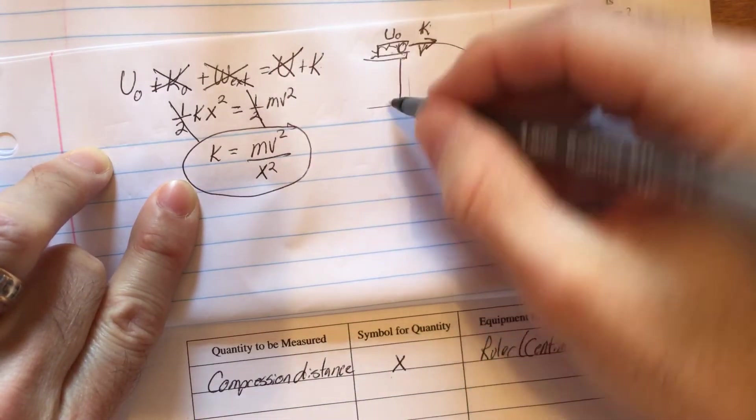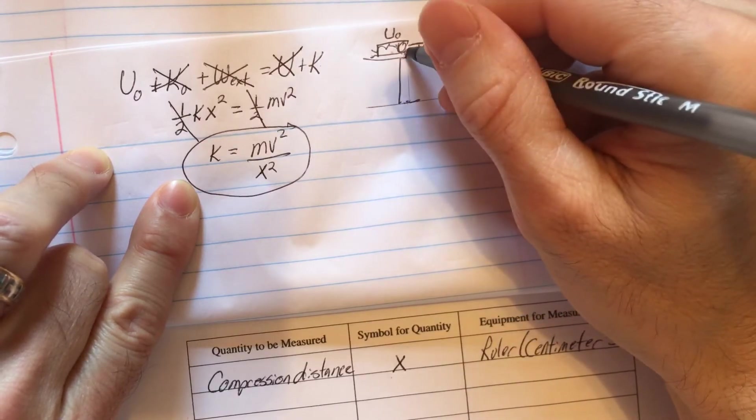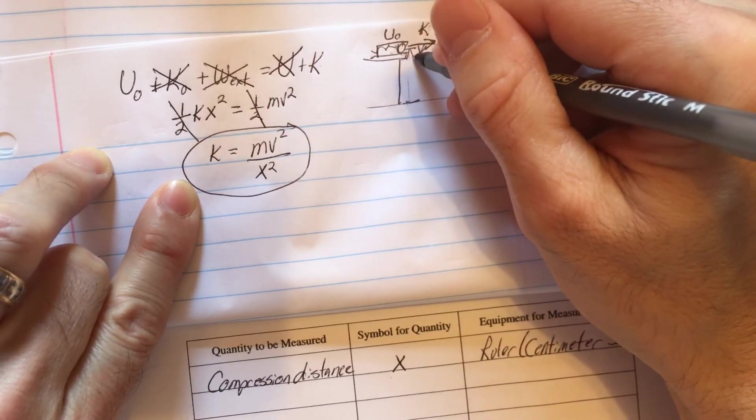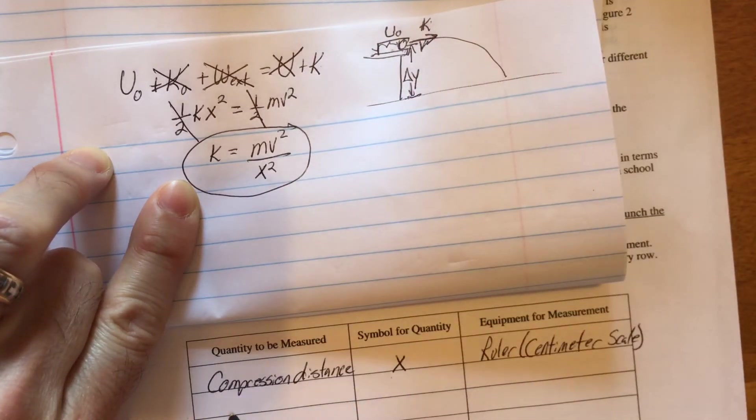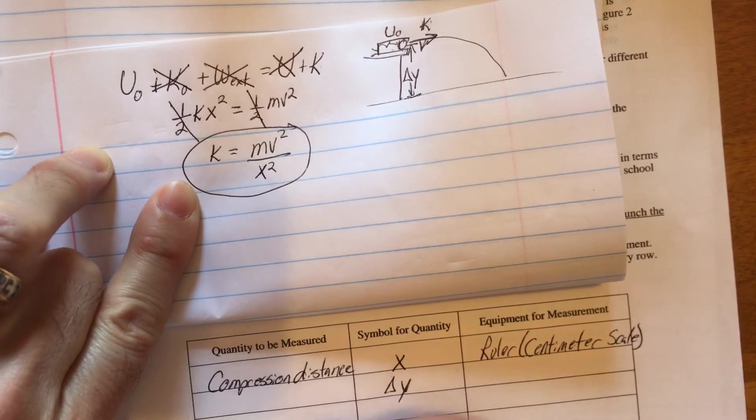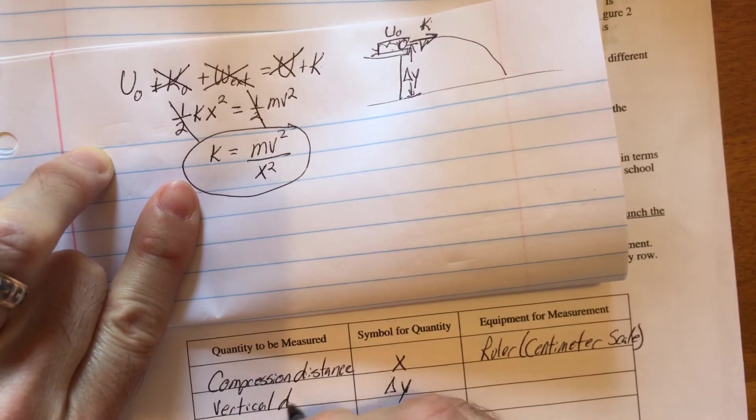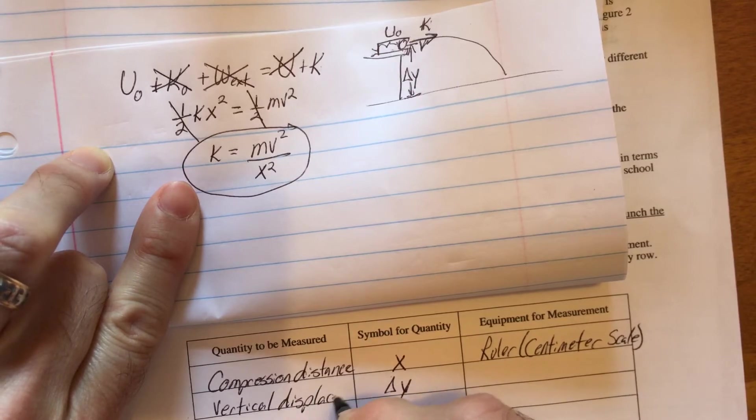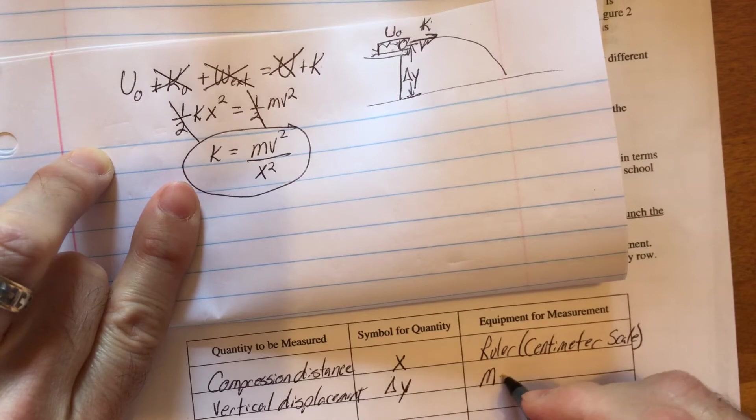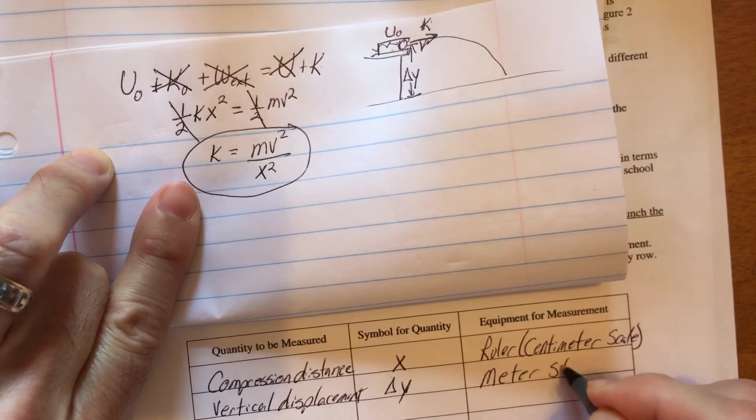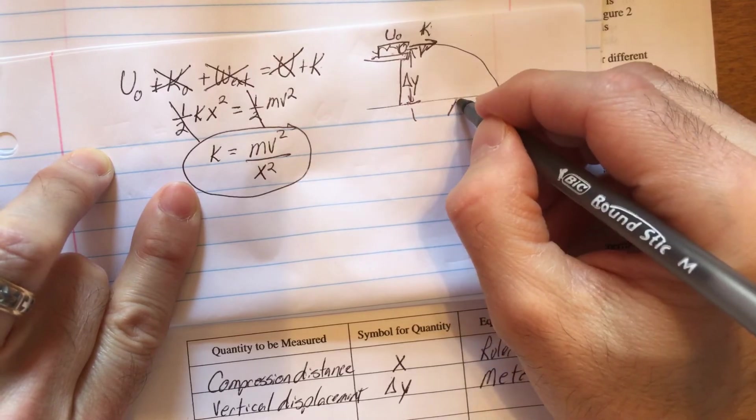What else could I measure? Well, in order to study this projectile motion, I'm going to have to figure out what the height of this table is. I'm going to call that my delta y. And so delta y is my vertical displacement. And I'll use a meter stick for that.